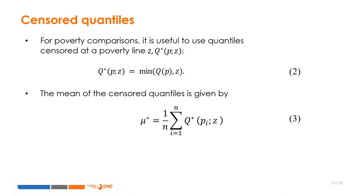The censored quantile is simply equal to the quantile when the associated income is below the poverty line, and equal to the poverty line otherwise. So, the mean of the censored quantiles is the sum of all censored quantiles divided by the total population.